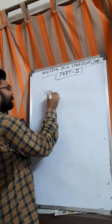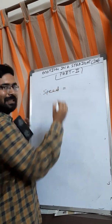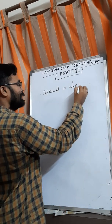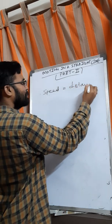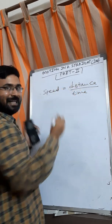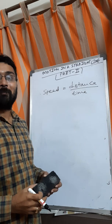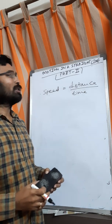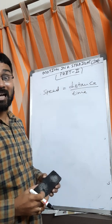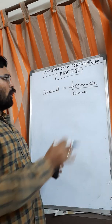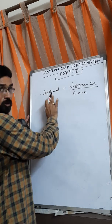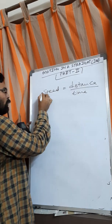First, speed. Speed is nothing but distance by time. The formula is: speed equals distance divided by time. We can define it as the distance travelled per unit time is called speed. How much distance is travelling in one particular unit of time — that is called speed.